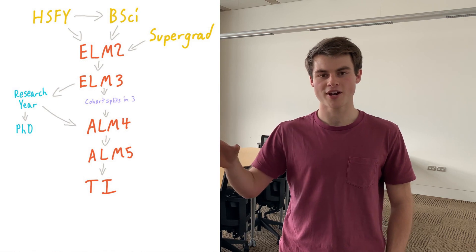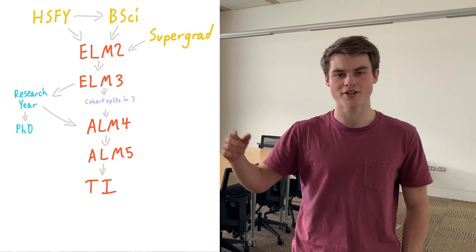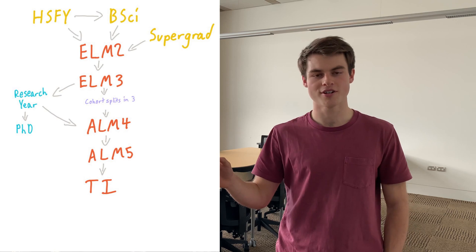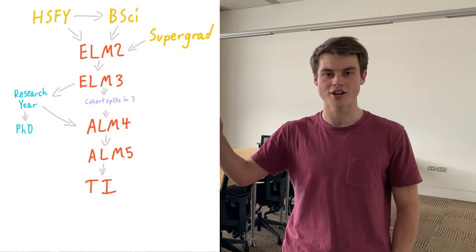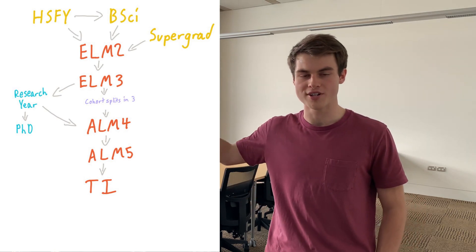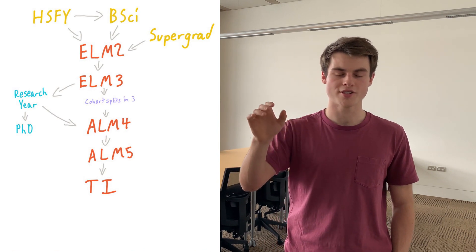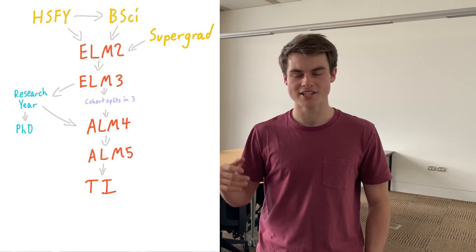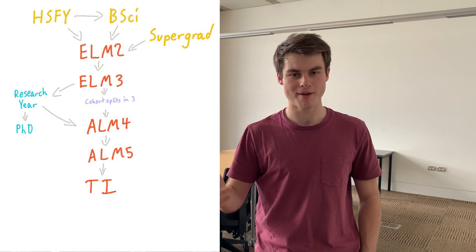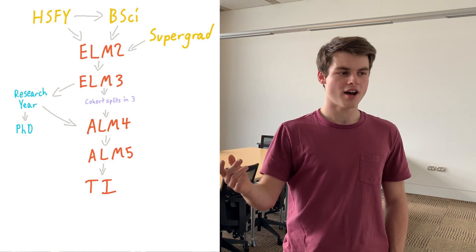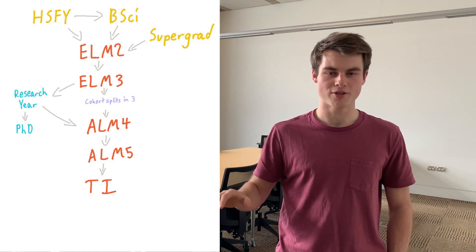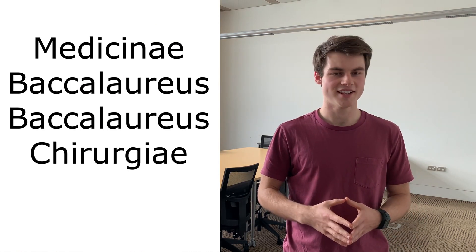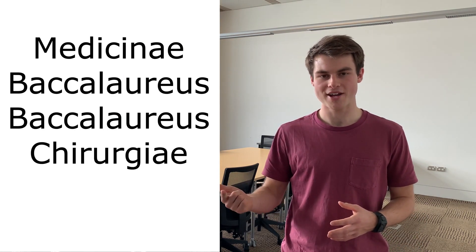After ELM 3 the cohort splits into three, with a third going to Wellington, another third going to Christchurch, and another third staying in Dunedin. There's also the option of taking a year out and doing a research year. Assuming you go to one of those campuses, you'll be in ALM — Advanced Learning Medicine — ALM 4 and ALM 5, where you spend time doing rotations through different hospitals.